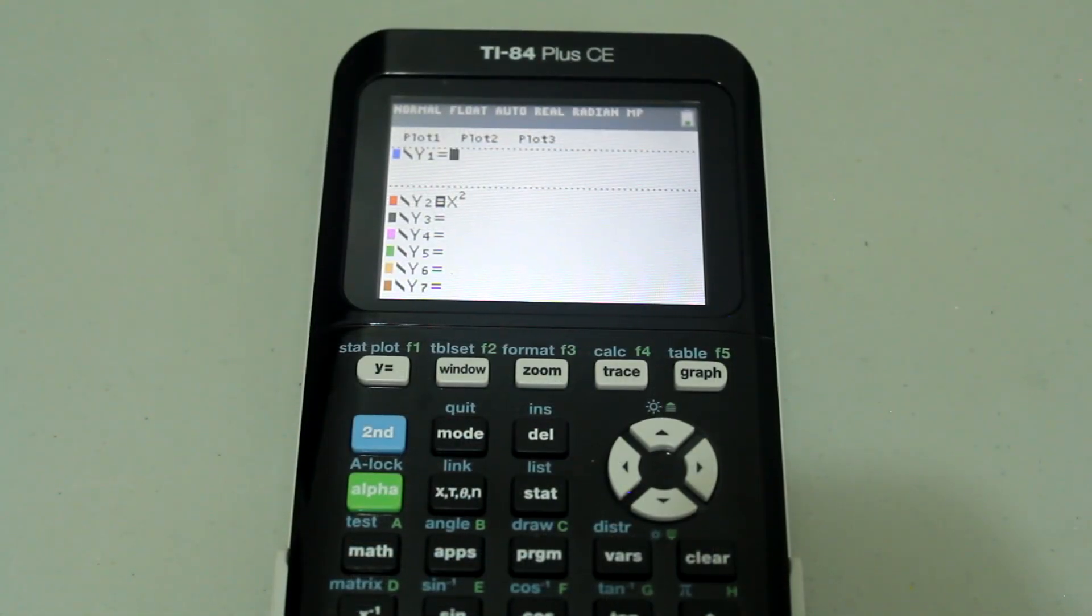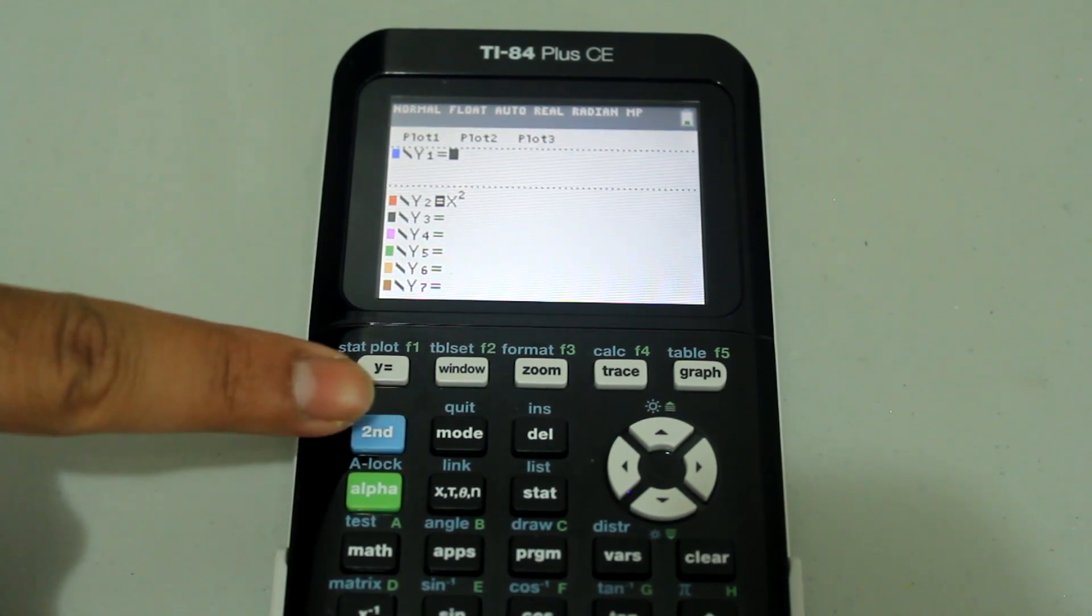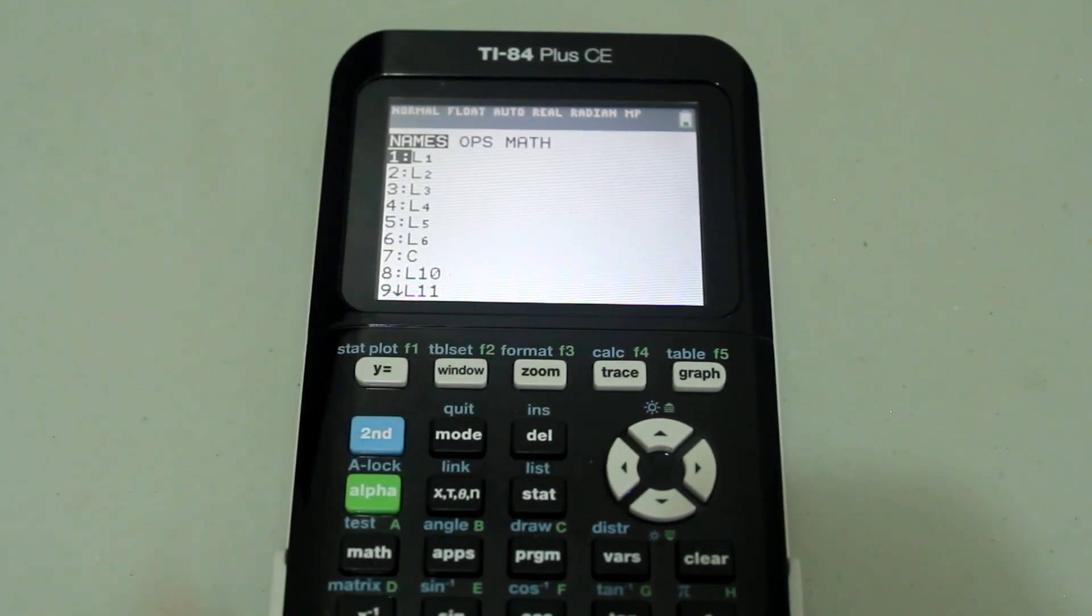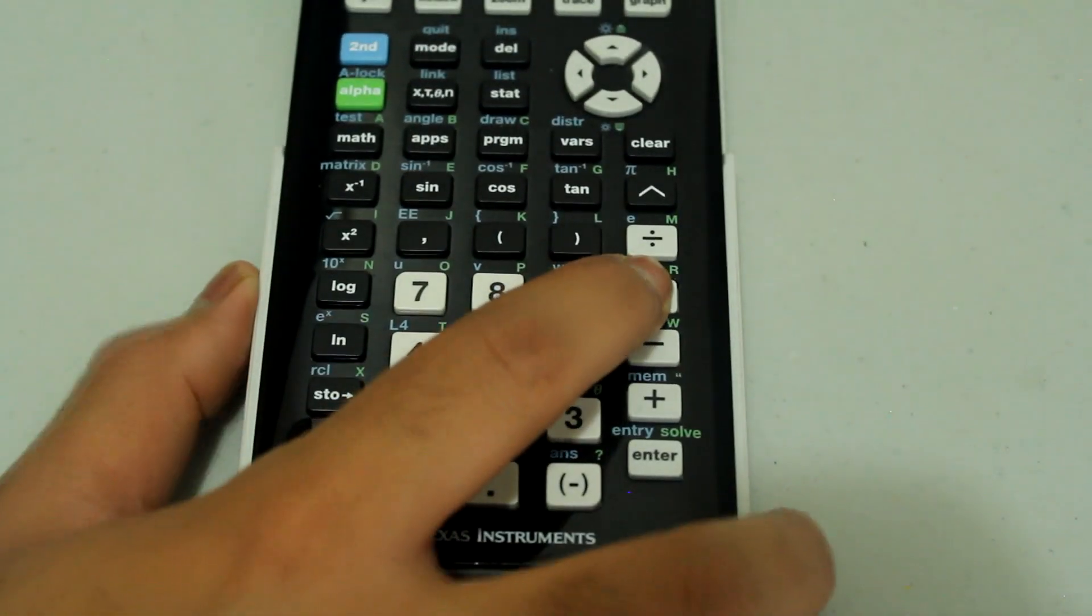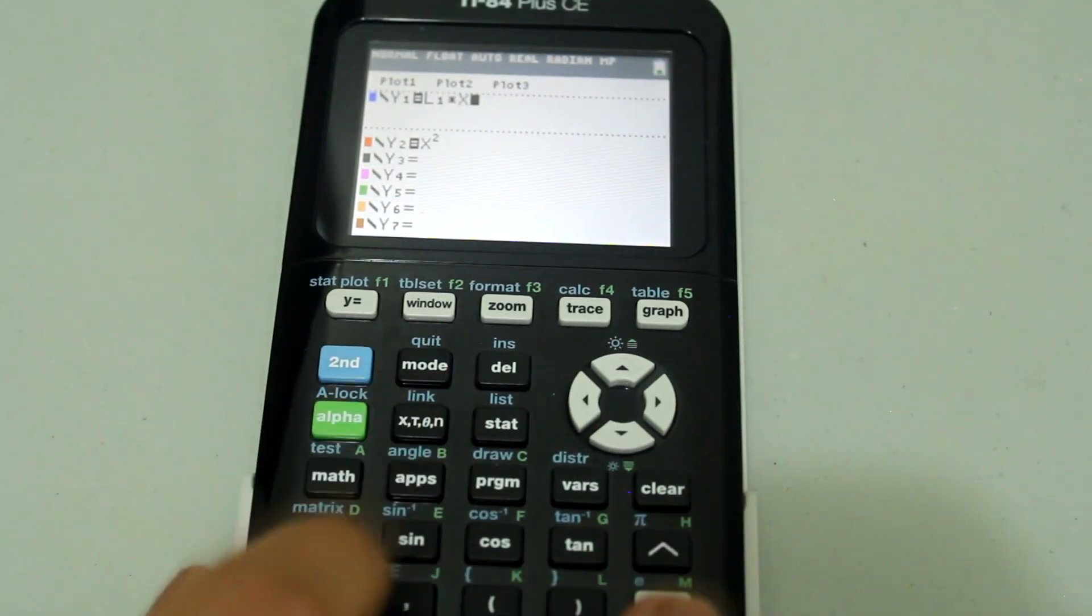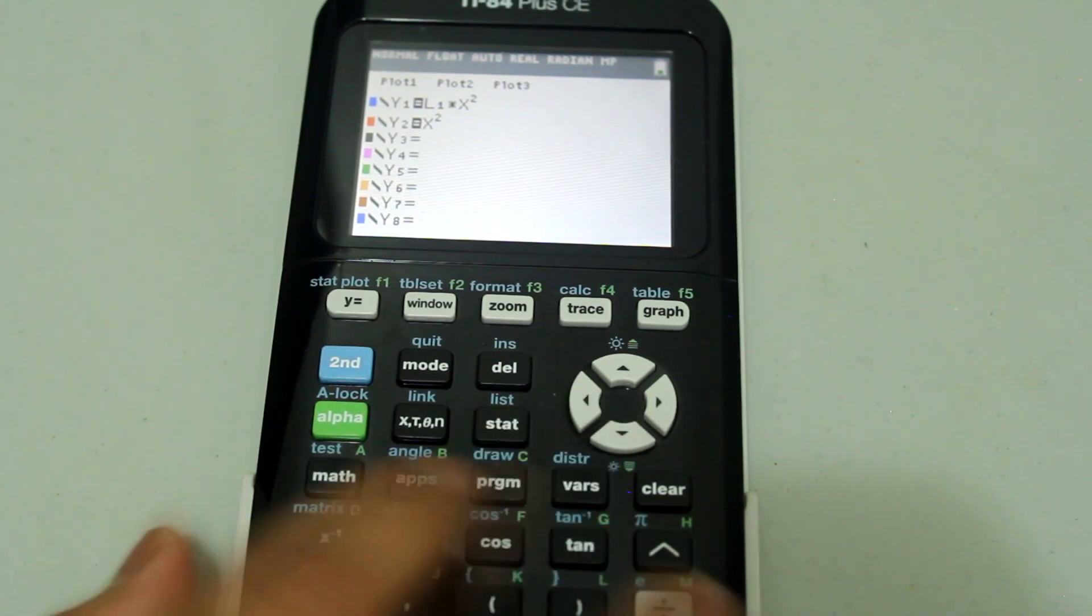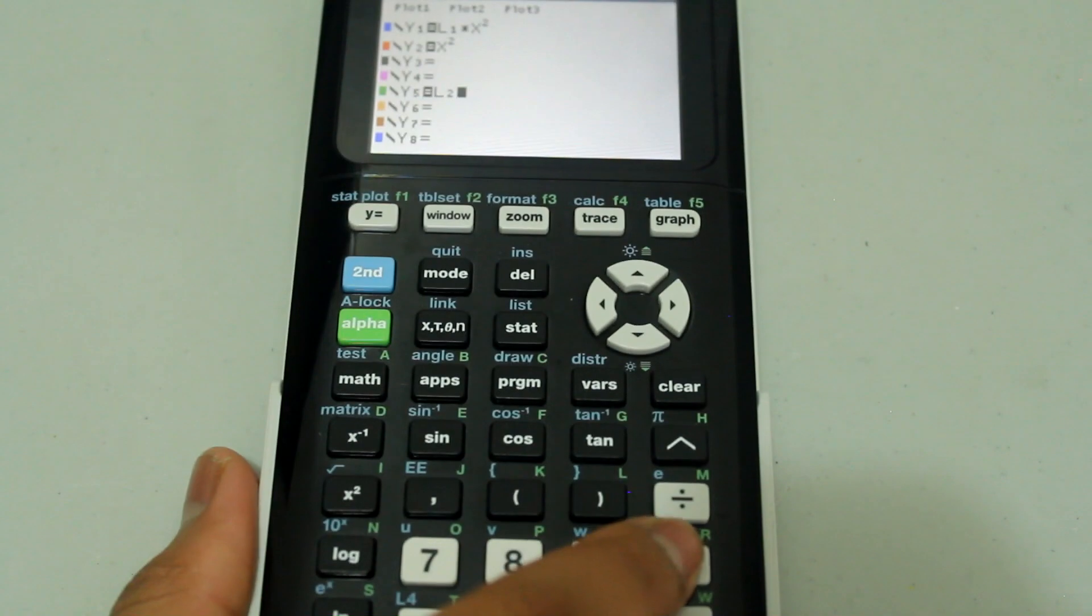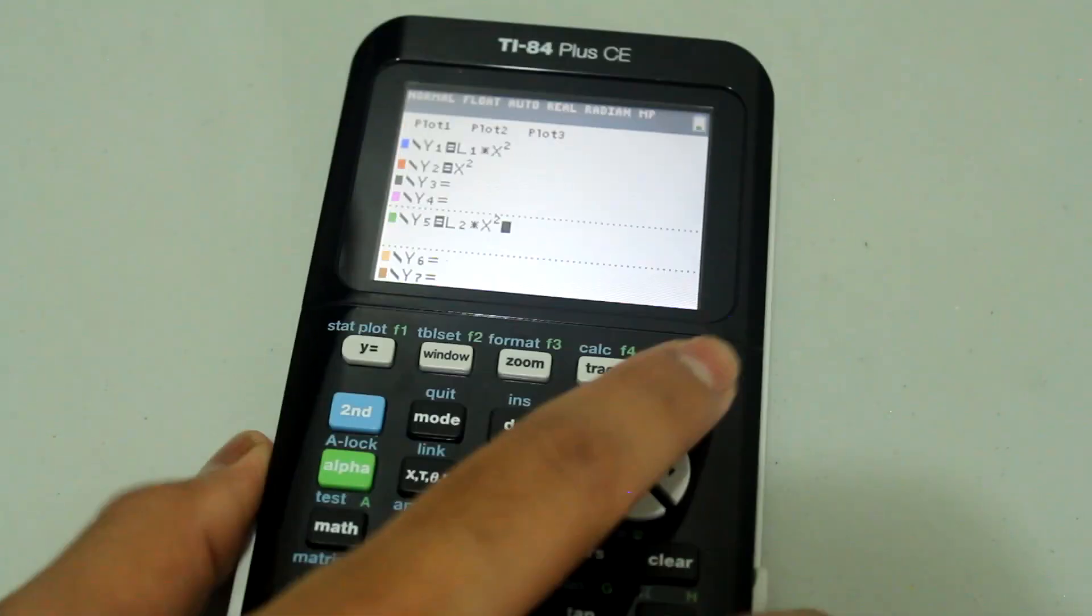Similarly, if you wanted to multiply your equation by the list, you could do that in a similar way. Second, stat, choose, let's say for example L1, multiply x squared and you could do that with L2 also. Second, stat, L2 and multiply x squared and now graph it.